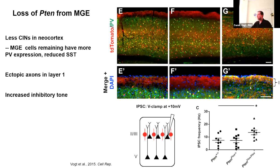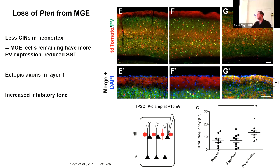Our collaborators in Vic Asho's lab patched onto excitatory cells to measure inhibitory input, and in the knockouts, they were getting way more inhibitory input—an increased inhibitory tone. Since we knocked out PTEN from progenitors and lost many cells, we wanted to know if some of these phenotypes could still occur if we avoided the cell death. So we wanted to develop a way to look at missense mutants, and then try different Cre lines with the TSC line to see if we could recapitulate findings.